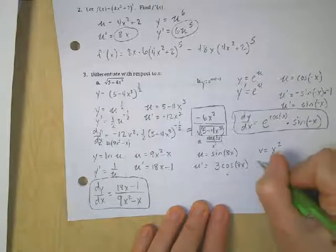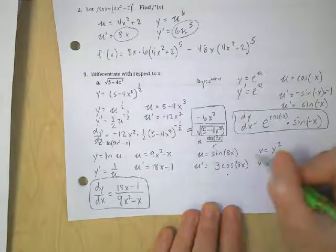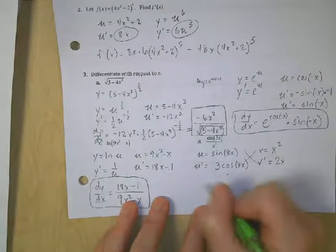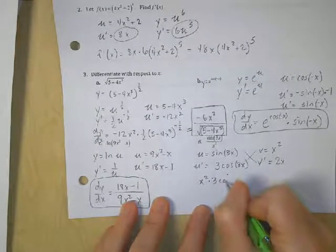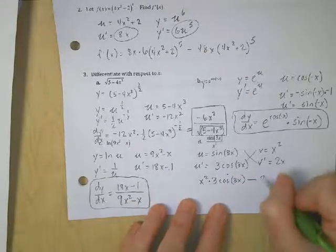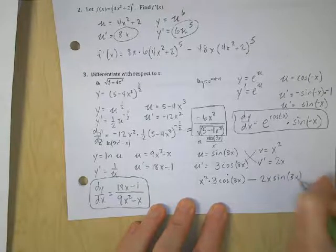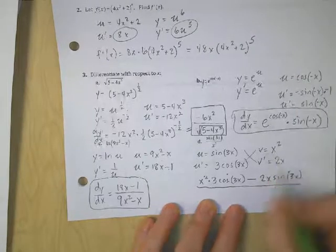The derivative of that is 2x. Now I'm going to crisscross applesauce using my quotient function, which is v times u prime minus u times v prime all divided by v squared. v squared, that's x squared squared.